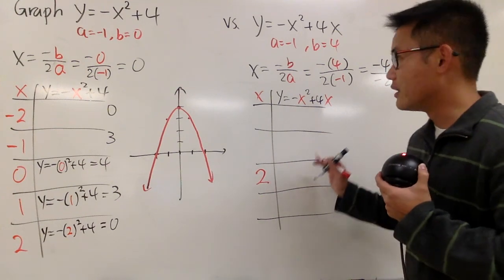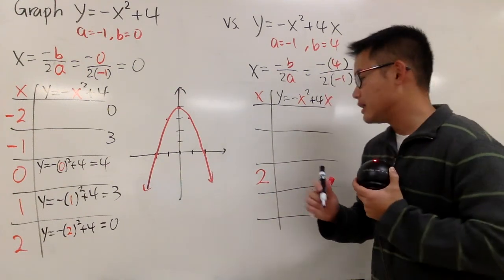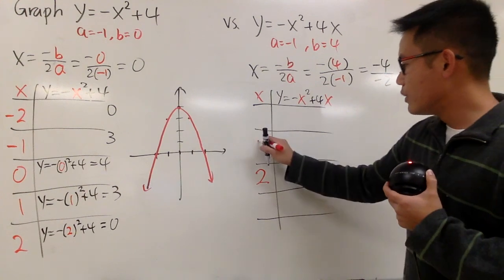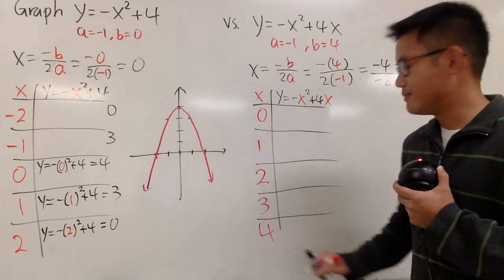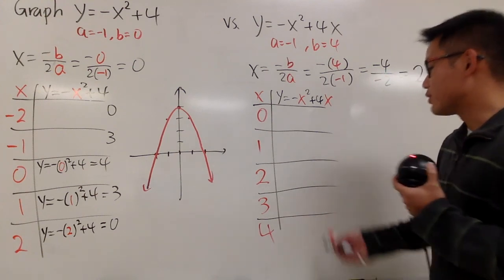And this is going to get us the vertex of this parabola. And then pick its neighbor numbers, 1 and 3. And then 0 and 4. And now let's just do the work.